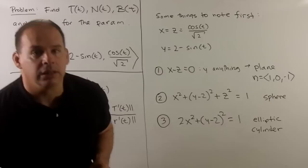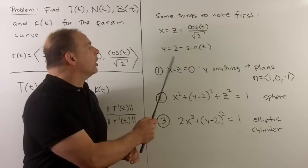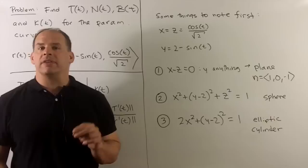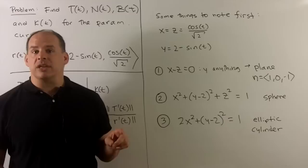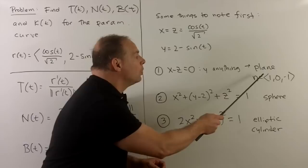Before we do any calculating, let's note some things to expect from our answers. First I note we have x and z equal to each other. If I push everything to one side, we get the equation x - z = 0. It's implicit that y can be anything, so we have a plane. And if we put a zero y in there, this is going to have normal direction ⟨1, 0, -1⟩.